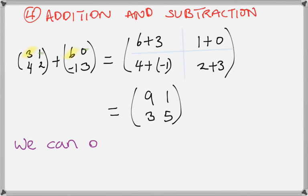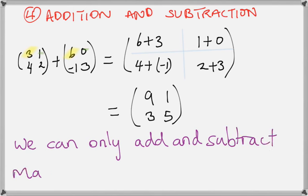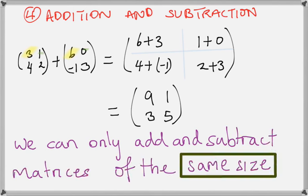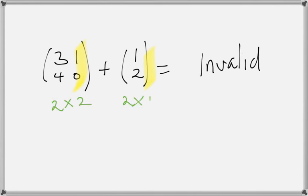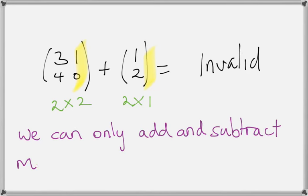So, 6 plus 3, 9. 1 plus 0, 1. And 4 plus negative 1 is actually 3 because directed numbers. So, if you have a problem with negative numbers, use your calculator because they're going to pelt out a lot of that here in matrices. And 2 plus 3, 5. And something to note, you can only add and subtract matrices of the same size. So, for example, if I have this one here, you can't add that because these don't have anybody to relate to. Right? So, that's invalid. 2 by 2, 2 by 1, that's invalid. So, we can only add and subtract matrices of the same size.